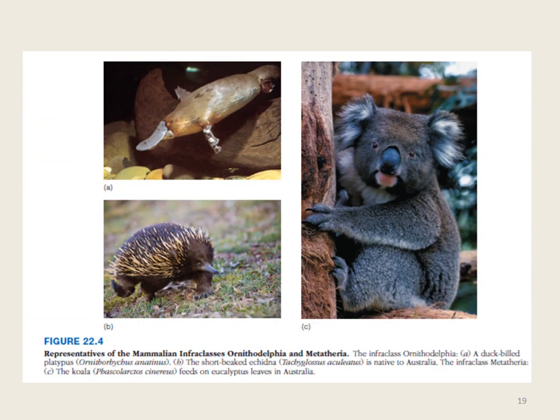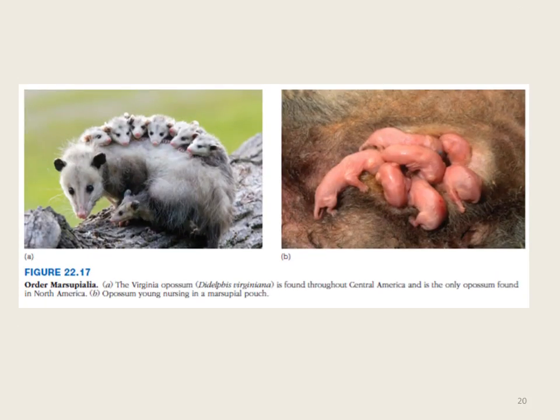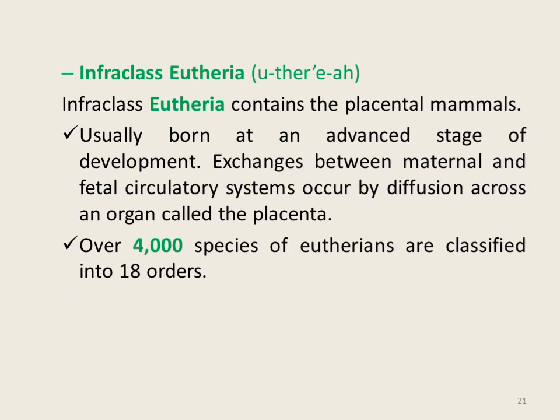Here are figures showing representatives of infraclass Ornithodelphia and Metatheria. The second therian infraclass is Eutheria, which contains the placental mammals. In placental mammals the young are usually born at an advanced stage of development, having been nourished within the uterus of the mother. Exchange of nutrients and waste between maternal and fetal circulatory systems occurs by diffusion across the placental wall, composed of both maternal and fetal tissues. Infraclass Eutheria is the most diverse taxon under class Mammalia, with more than 4,000 species classified into 18 orders.